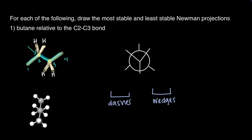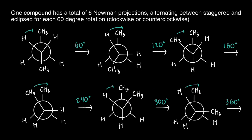On the front carbon, CH3 is at the bottom and the H's are at the top left and top right. On the back carbon, CH3 is at the top and both H's are at the bottom left and bottom right. This is one of our Newman projections. For one compound, there will be a total of six Newman projections where we alternate between eclipsed and staggered conformations by rotating one carbon, front or back, 60 degrees clockwise or counterclockwise until we reach a full 360 degree rotation.